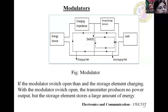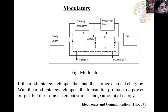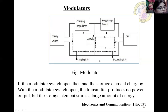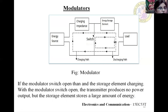An effective modulator pulse must perform in the following manner: it should rise from zero to its maximum value almost instantaneously; it should remain at its maximum value for the duration of the transmitted pulse; and then it should fall from the maximum value back to zero almost instantaneously. Here you can see the block diagram of the modulator. It consists of the power supply, the charging impedance, and the storage element.